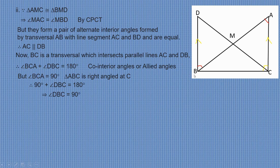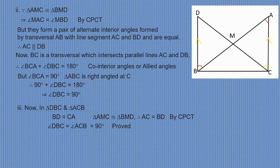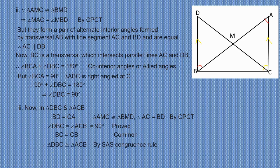Now to show triangle DBC is congruent to triangle ACB. In triangle DBC and triangle ACB: BD equals CA since triangle AMC is congruent to triangle BMD and AC equals BD by CPCT. Angle DBC equals 90 degrees and angle ACB equals 90 degrees. BC is common. Therefore, triangle DBC is congruent to triangle ACB by the SAS congruence rule.